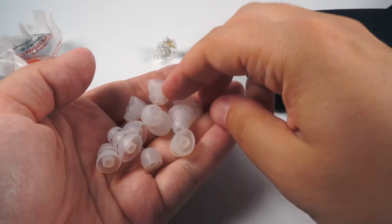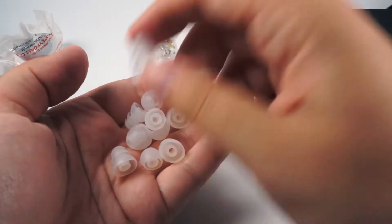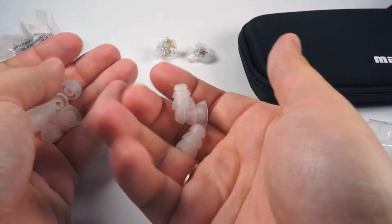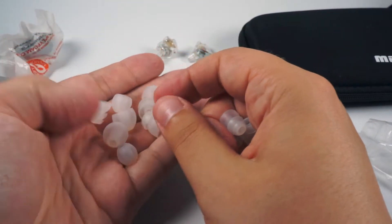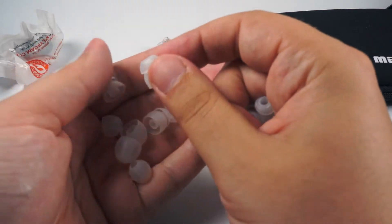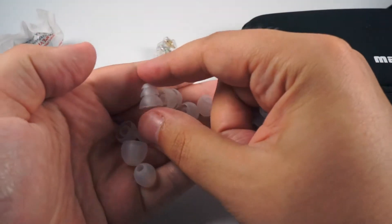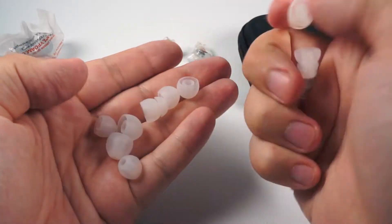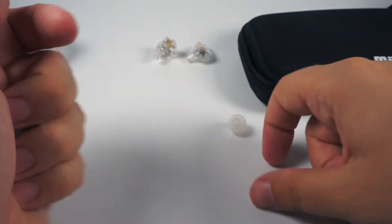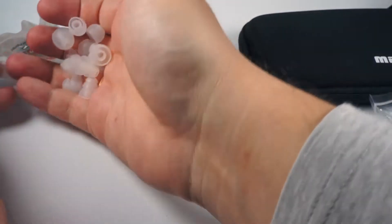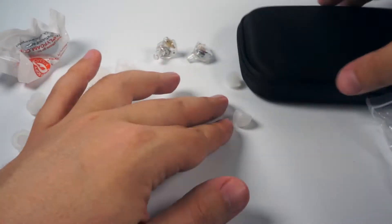So there are three flange tips, two different sizes. Because these IEMs are targeted for professional usage, sometimes you will need to have good sound isolation, and three flange tips are perfect for this. Double flange tips and three pair of single flange tips. So as you can see, very good set.